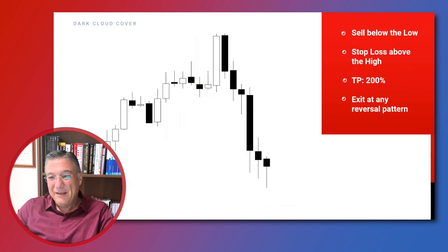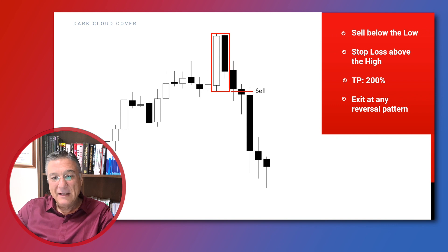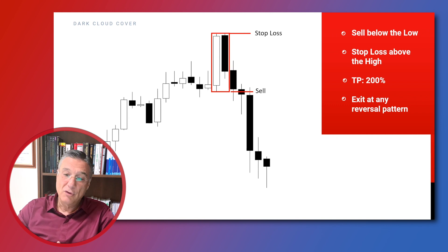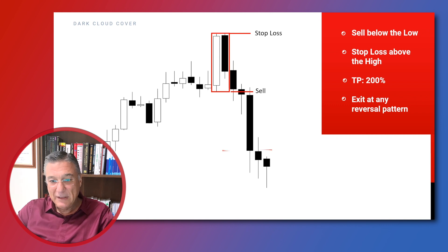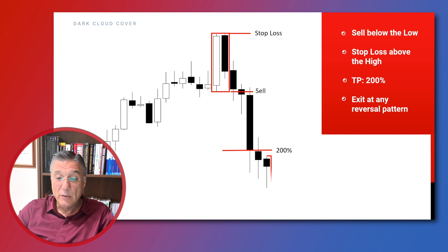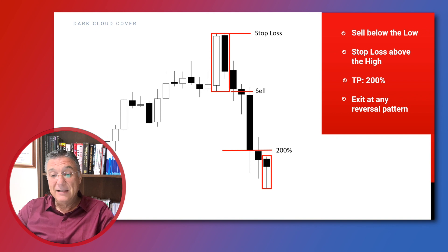The second strategy also identifies the dark cloud cover at the top area of the rally. We sell below the low price of the pattern and place a protective stop loss right above the high price of the pattern. We take profit at the 200% level, closing part of the trade there, and allow another part to run even lower, closing it when we encounter a reversal in the opposite direction — such as when we identify a hammer.